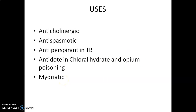Regarding the uses of this drug: it is used as an anticholinergic drug, which prevents the action of acetylcholine. It is used as an antispasmodic, antiperspirant, and in tuberculosis. It is also used as an antidote in chloral hydrate and opium poisoning. The extract is used for dilation of the pupils, a process known as mydriasis. This concludes the topic of Belladonna — an important drug for your examination. Thank you, happy learning.